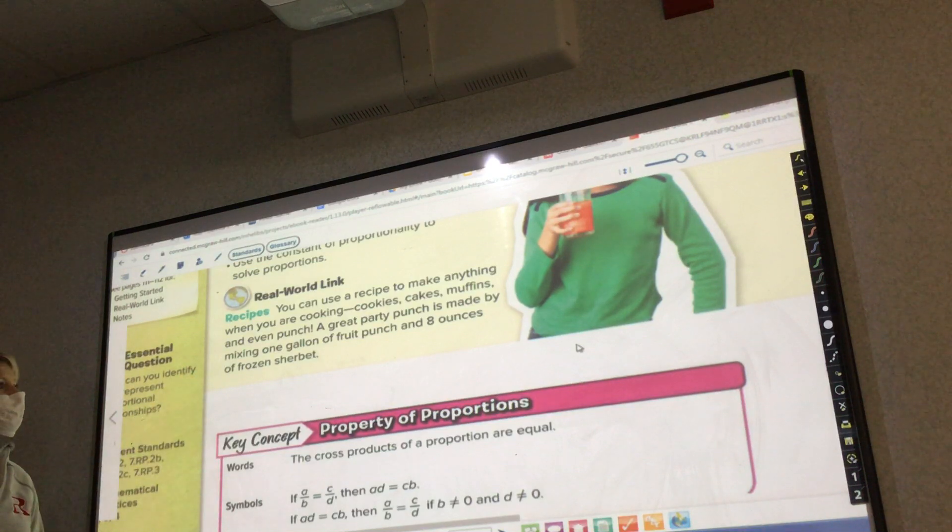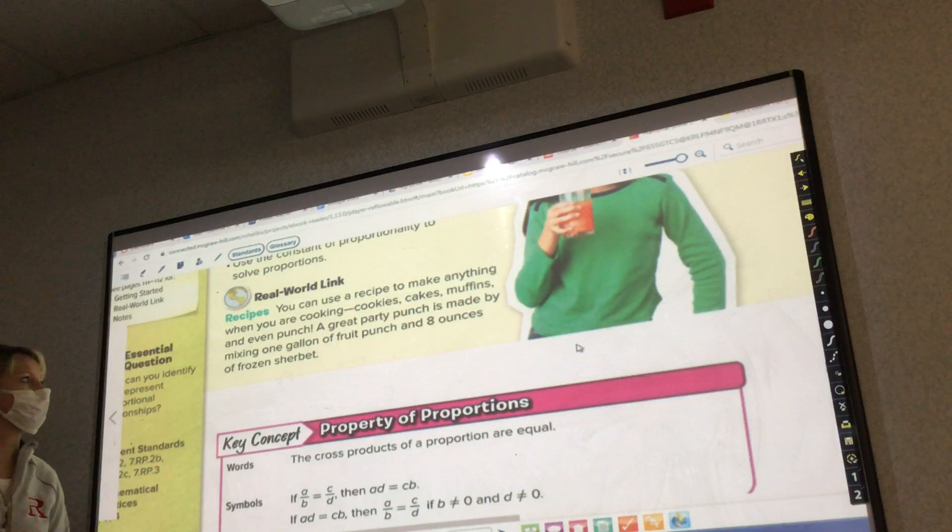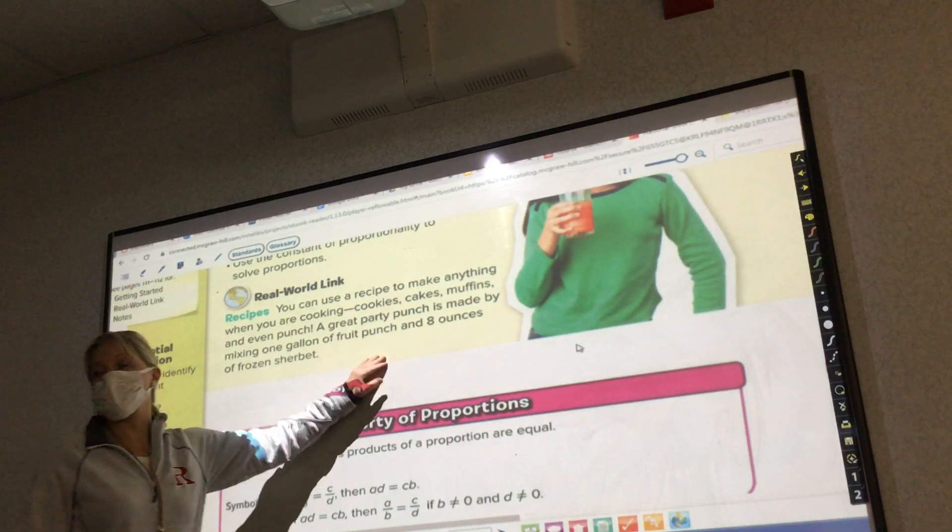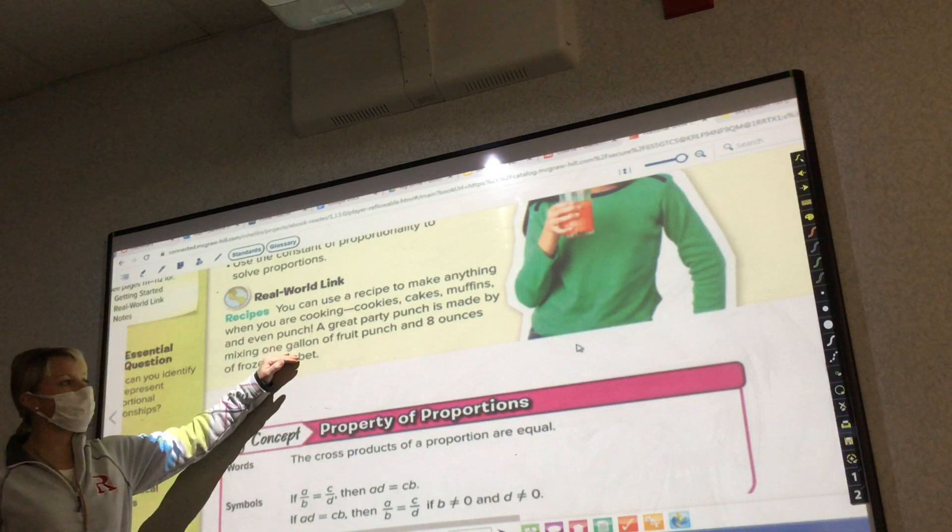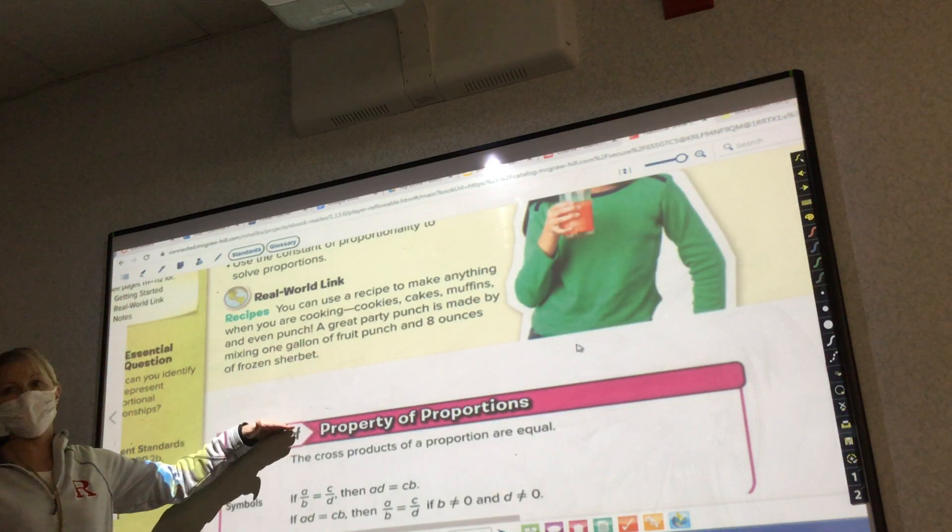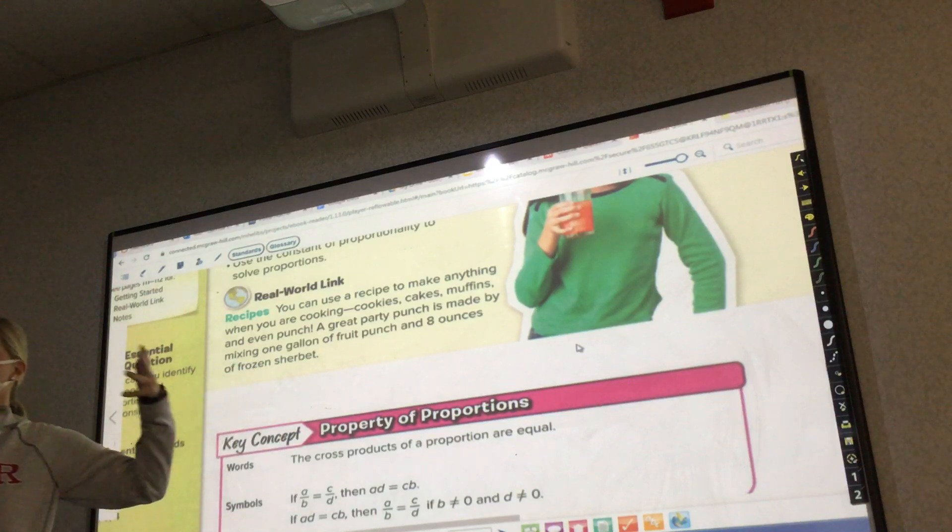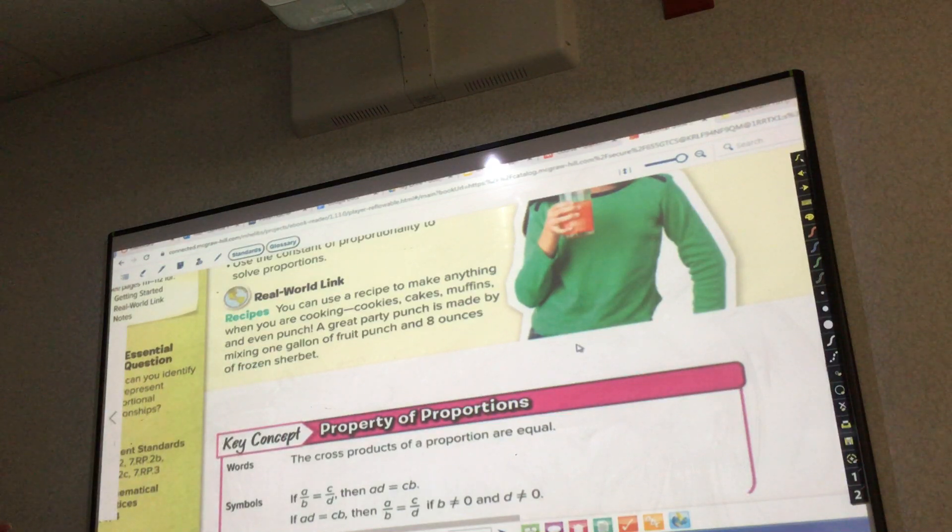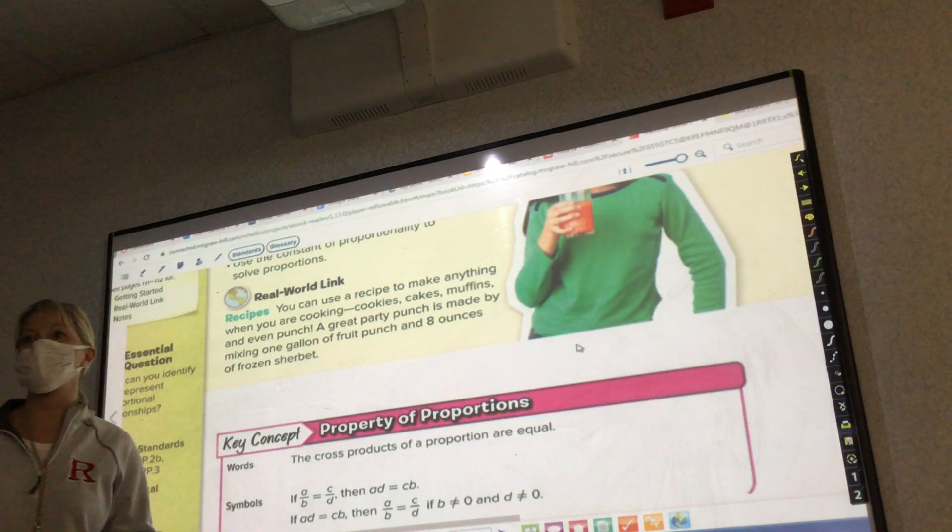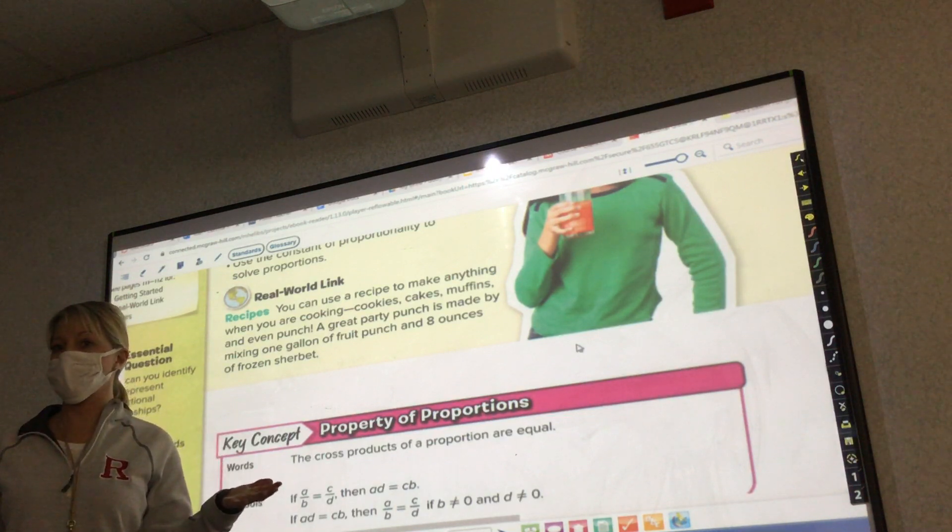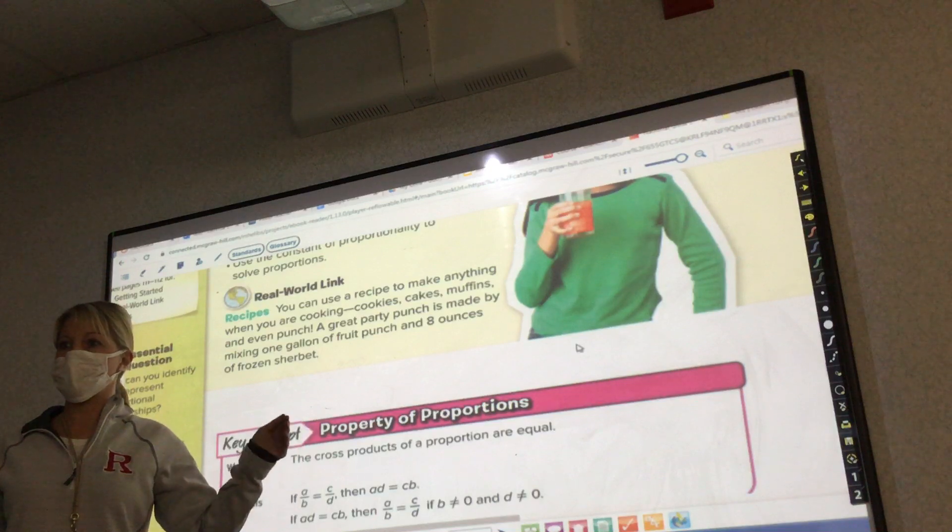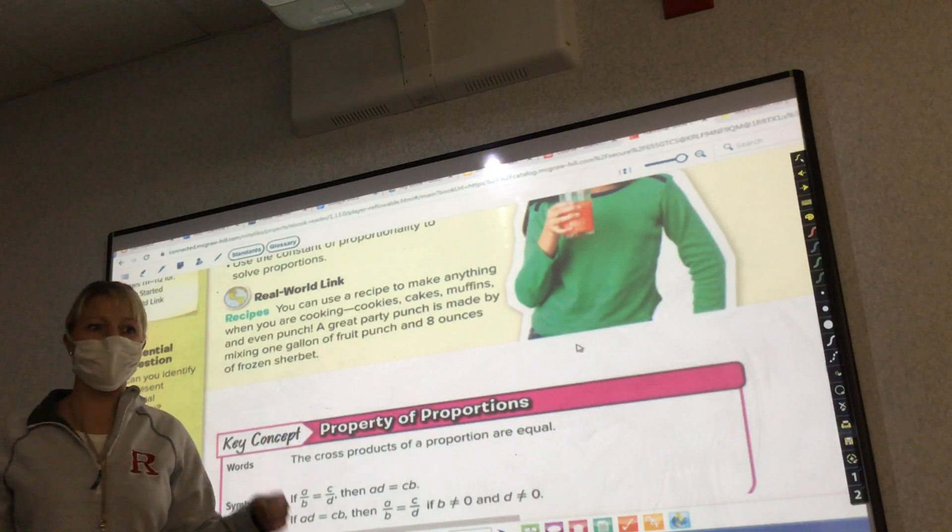In the real world, you can use a recipe to make anything when you're cooking cookies, cakes, muffins, and even punch. A great party punch is made by mixing one gallon of fruit punch and eight ounces of frozen sherbet. This is when I would do a proportion. If it's one gallon of fruit punch to eight ounces of frozen sherbet, let's say I need more than a gallon because I'm making it for all my classes. Then it'll tell me how many servings that might make, and then I have to double it or triple it to get as many servings as I need for all my students. Make sure you guys have your notes out.